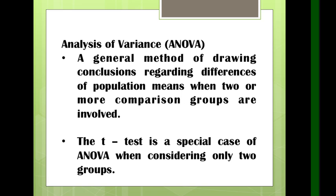For the Analysis of Variance or ANOVA, it is a general method for drawing conclusions regarding differences of population means when two or more comparison groups are involved. If t-test is used when comparing two groups, ANOVA is used when comparing three or more groups. T-test is actually a special case of ANOVA when considering only two groups — but for three, four, or five groups, use ANOVA.